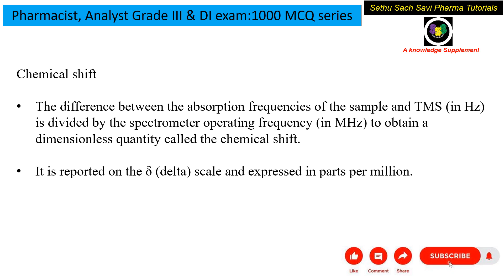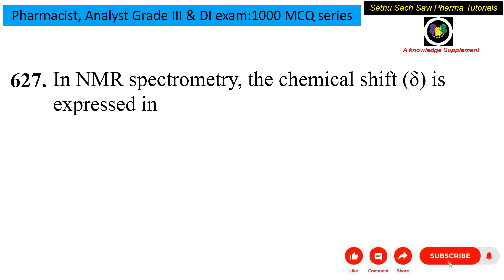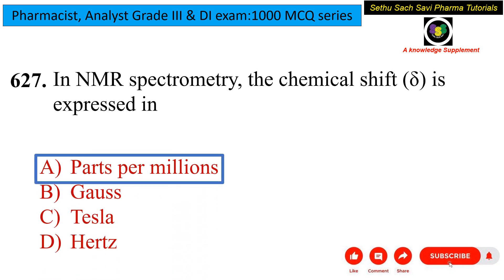An additional advantage of using ppm is that different NMR instruments may have slight variations in magnetic field. By using parts per million, we obtain relatively more accurate and comparable measurements across different equipment. Therefore, the answer is ppm.